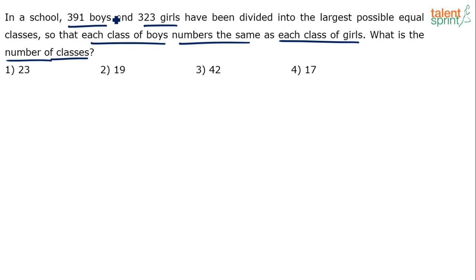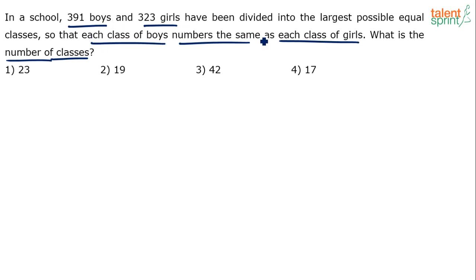We are forming classes for boys and classes for girls. The condition is that they have been divided into the largest possible equal classes — the class size should be as large as possible. Also, the number of boys in each boys' class must be the same as the number of girls in each girls' class.